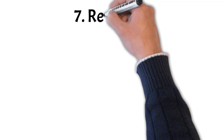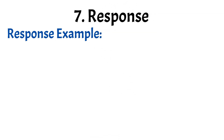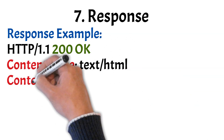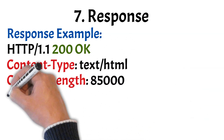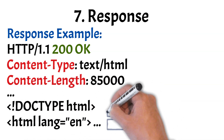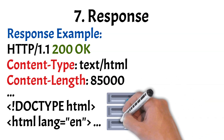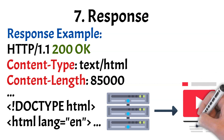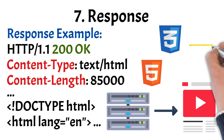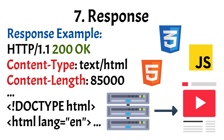Once the request reaches the appropriate server — often a nearby CDN node — it sends back a response. This begins with a status line like 200 OK, followed by headers that describe the content, such as its type and length. While the response body often contains an HTML page, it can vary — it might return a video file, JSON data, or other formats. In the case of a web page, the HTML forms the basic structure. Alongside it, the browser also fetches CSS files, which handle visual styling like colors, fonts, and layout, and JavaScript files which make the page interactive, enabling things like autoplay, search suggestions, or comment sections to function.